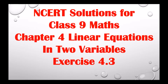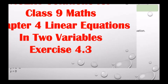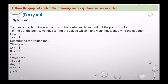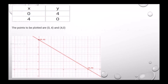Let's solve the textbook exercise. The first question is: draw the graph of each of the following linear equations in two variables. For x plus y equals to 4, to draw the graph we need to find points to plot by finding values of x and y satisfying the equation. Substituting x equals 0 gives y equals 4; substituting x equals 4 gives y equals 0. So the plotted points are (0,4) and (4,0), giving a straight line.